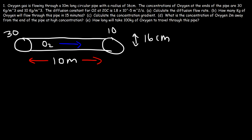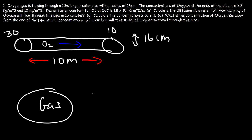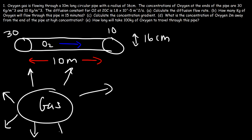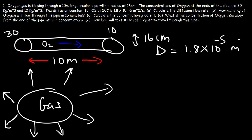Diffusion is a process where material moves from a region of high concentration to low concentration. Imagine if you sprayed perfume in a room — the gas particles will spread out in all directions, moving away from a region of high concentration toward a region of lower concentration. We're also given the diffusion constant D, which is 1.8 times 10 to the negative 5 square meters per second.